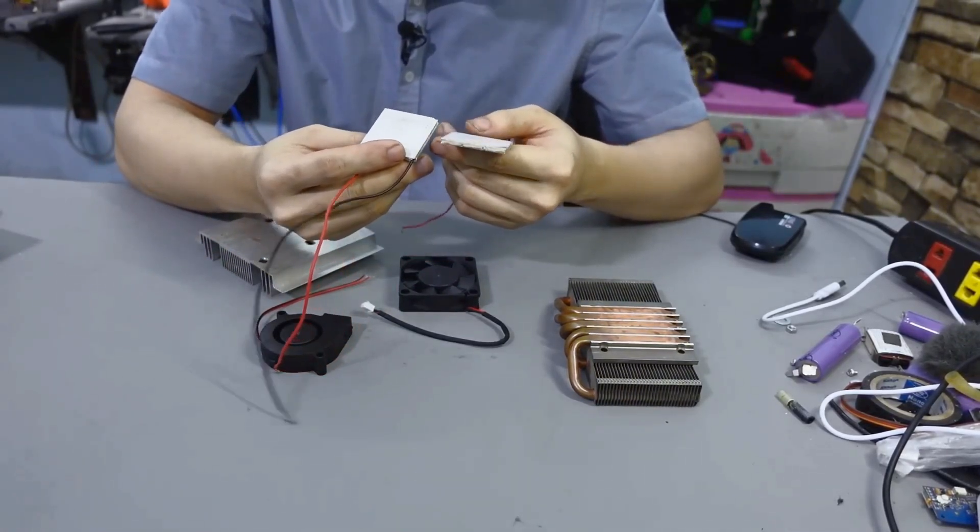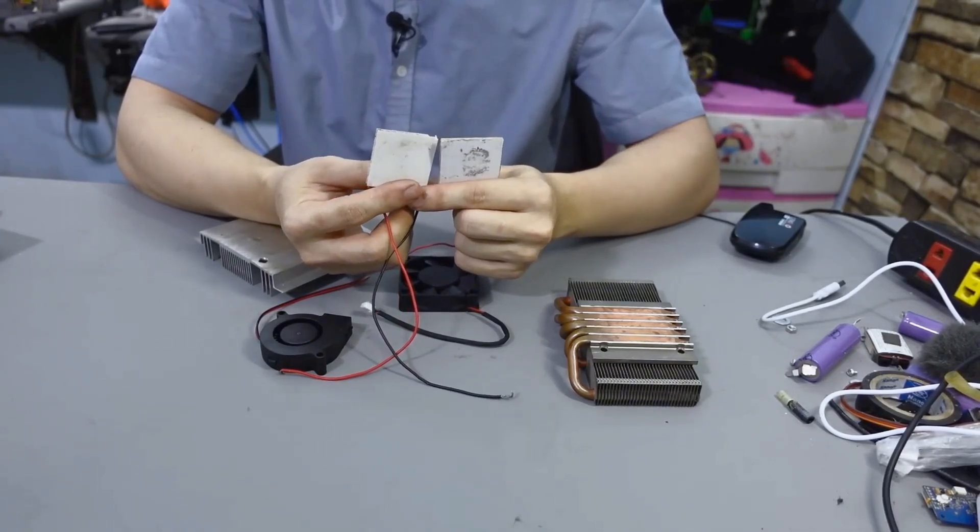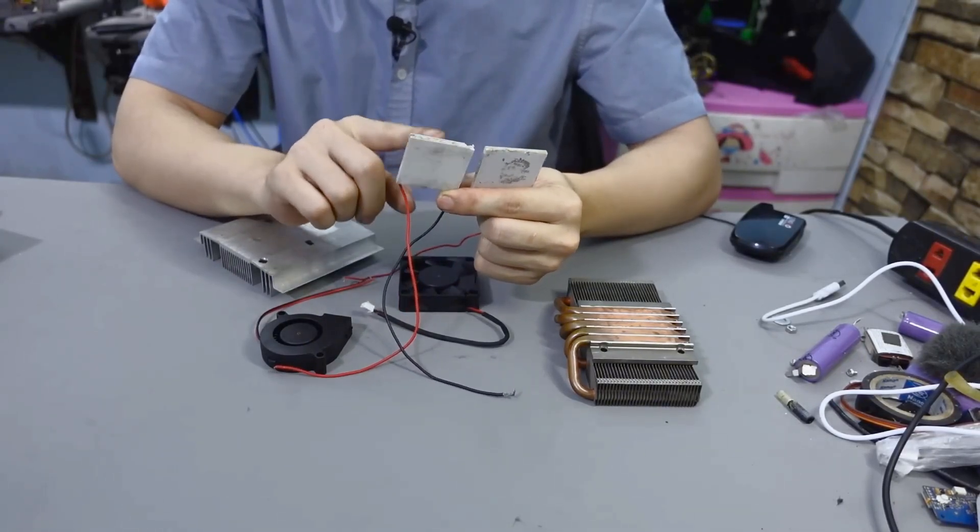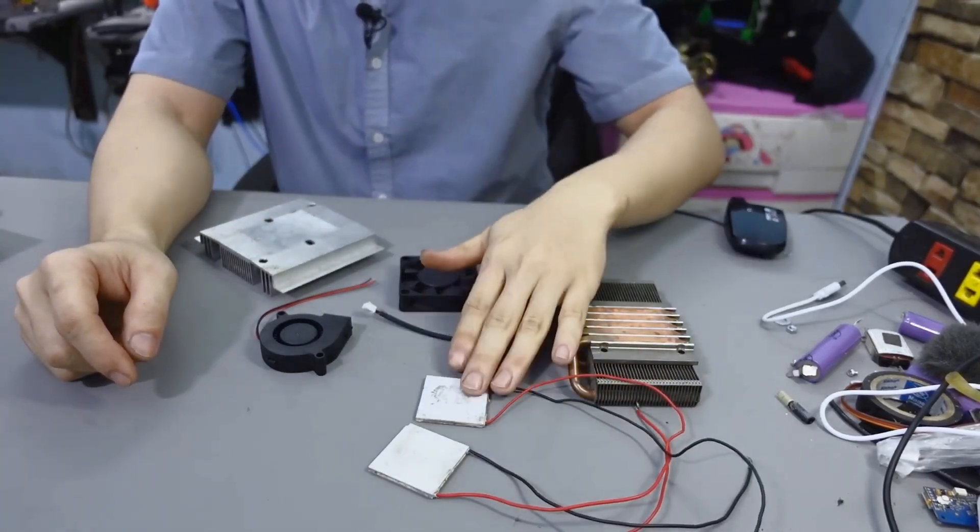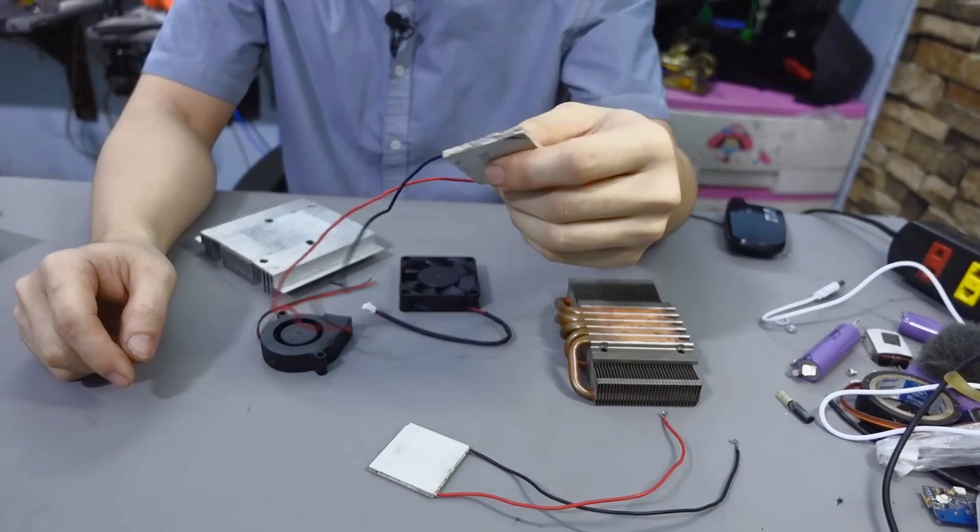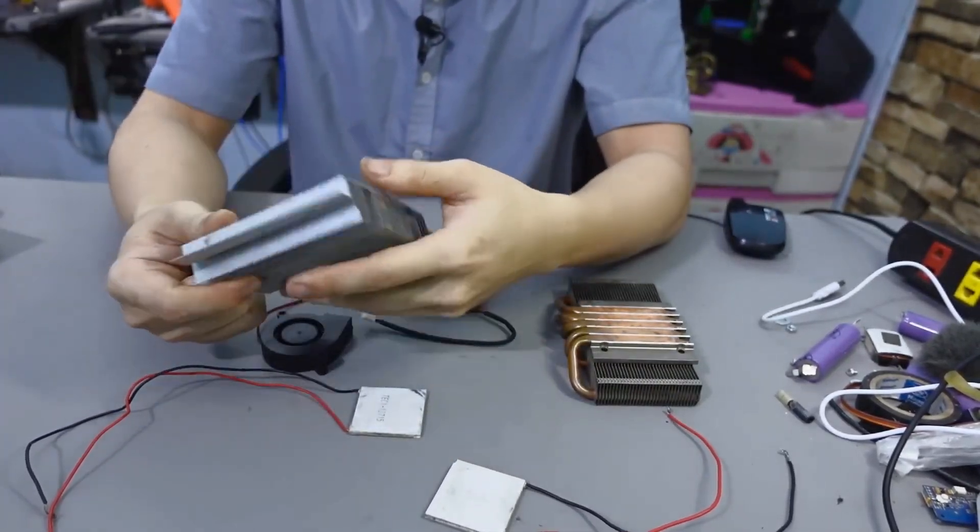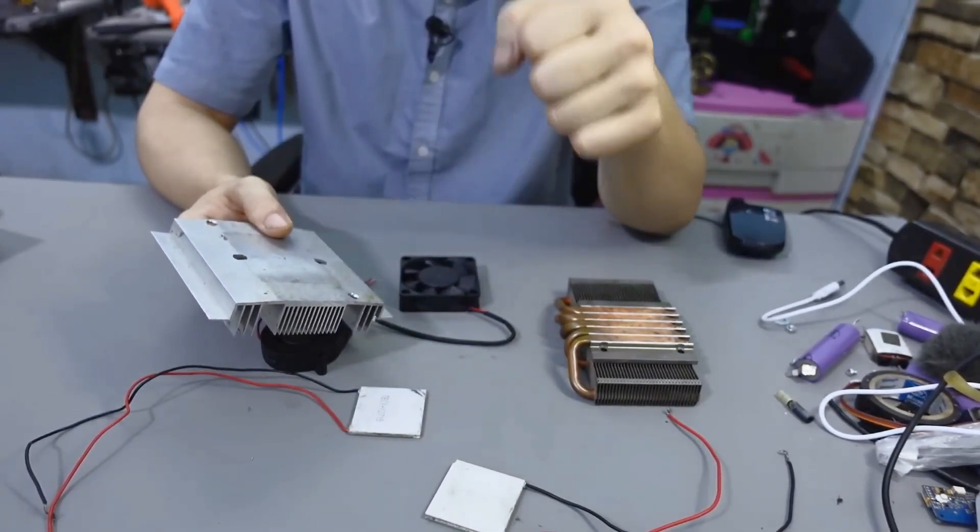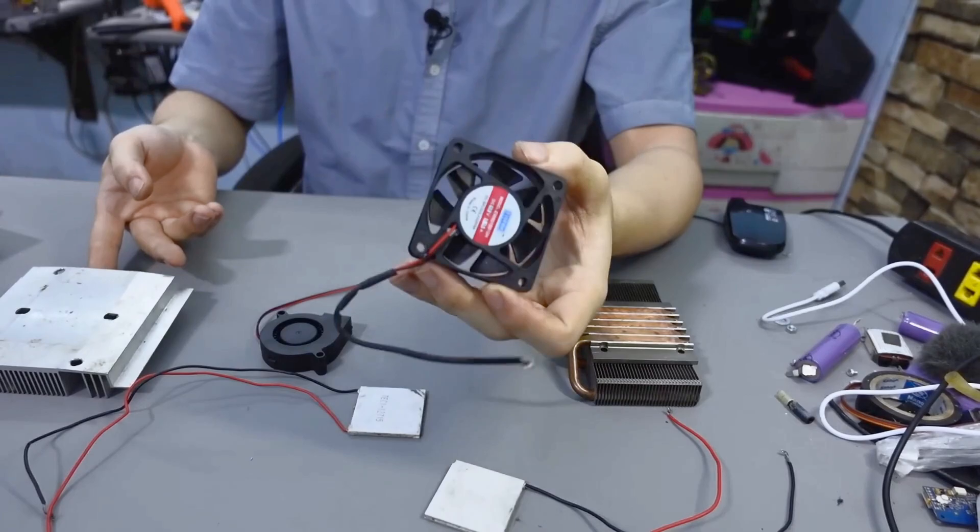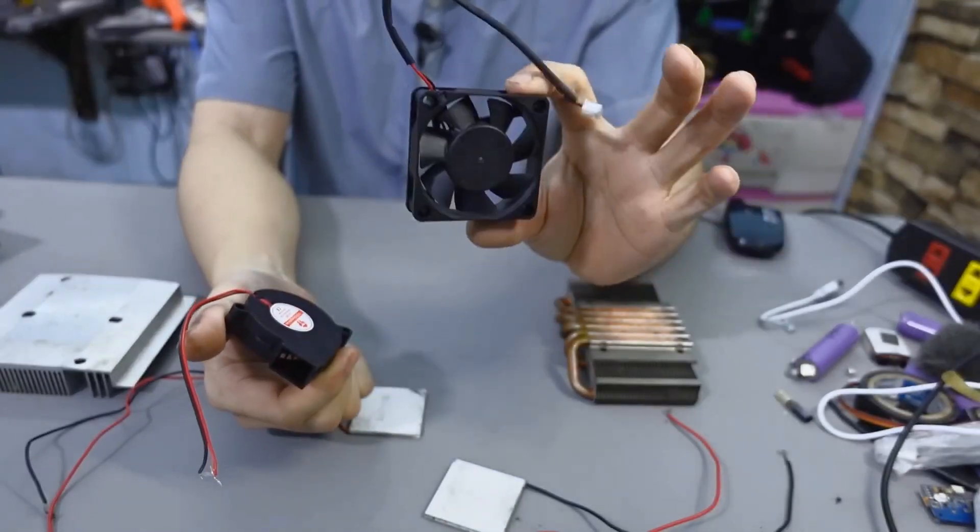First up, two peltier cooling modules. These little guys are the stars of the show. They can seriously drop the temperature big time. As long as we cool them properly, they can get really cold. I'll show you just how cold in a bit. Next, we've got this chunky aluminum heat sink. We'll use it to keep the peltier modules nice and cool. And of course, we can't forget these tiny fans.